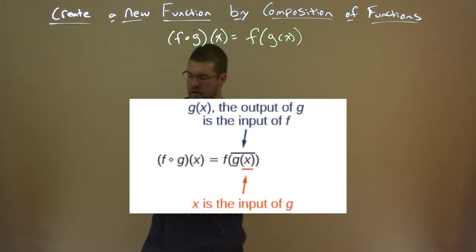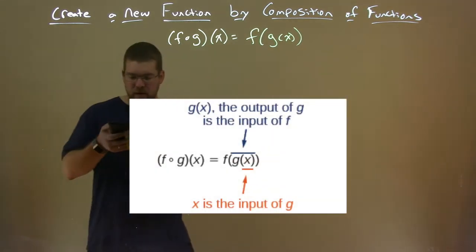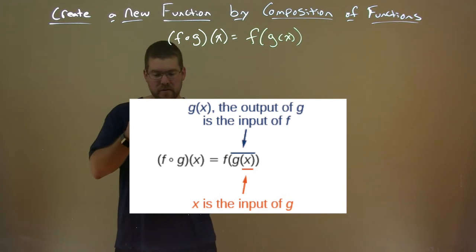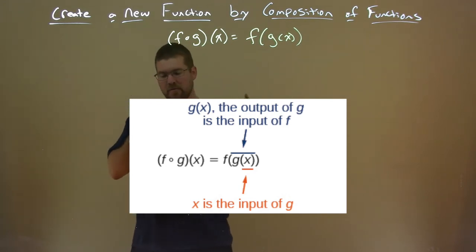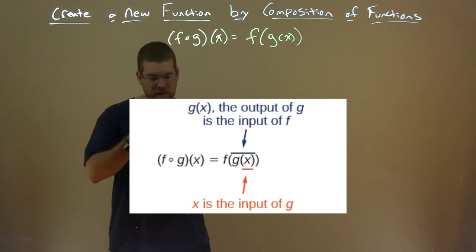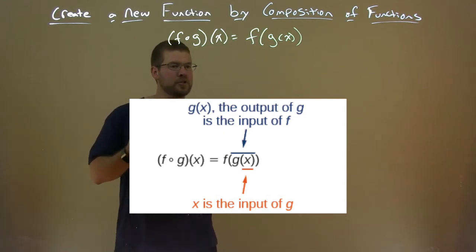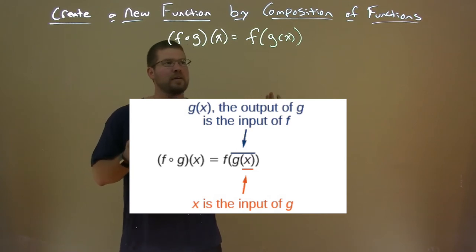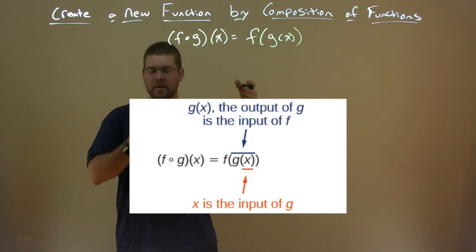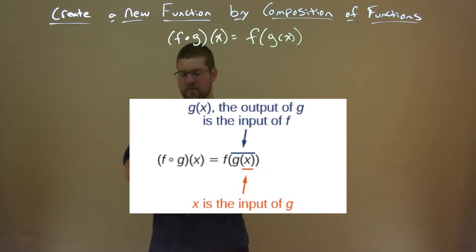We can see an image here of that. We have g of x — the output of g — is the input of f. So the output of g becomes the input of f, and x is the input of g. So x goes into g, it gets an output, that output goes as the input into f of x, and that's our compositional function.